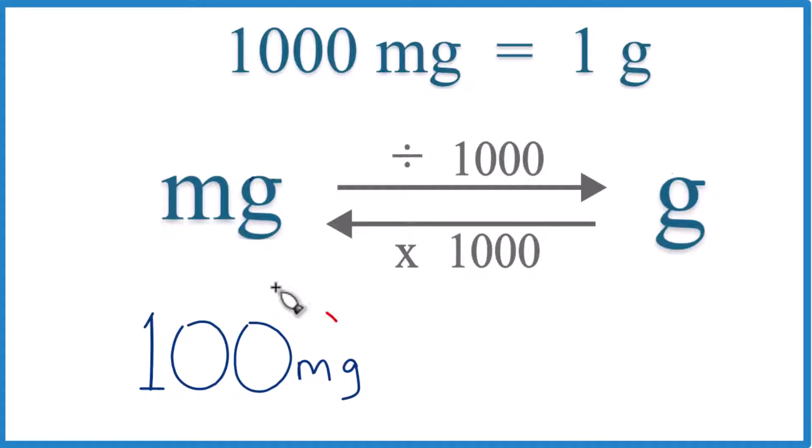Let me show you how to convert 100 milligrams to grams. So 1,000 milligrams, that equals 1 gram. There are 1,000 milligrams in 1 gram.